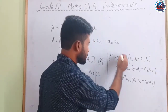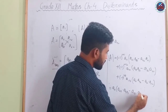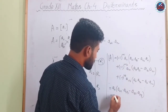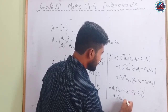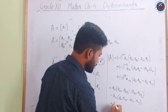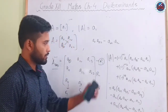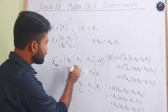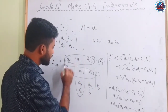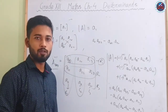Since (−1)^(1+1) = +1, we get a11·(a22·a33 − a32·a23). Since (−1)^(1+2) = −1, we subtract a12·(a21·a33 − a31·a23). Since (−1)^(1+3) = +1, we add a13·(a21·a32 − a31·a22). This is how we find the determinant of a 3×3 matrix. Note: we can expand along any row or column and the answer will always be the same.